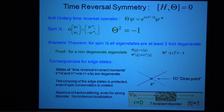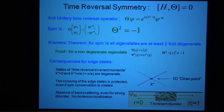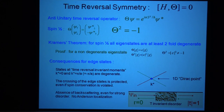In the band structure, time reversal takes K to minus K. It only makes sense to talk about Kramers' theorem at the values where K and minus K are the same point. If I have a non-zero value of K, its Kramers partner is at minus K. At a non-zero value of K, the states don't have to be degenerate because the degenerate state is at minus K. But if you're at K equals zero, then zero equals minus zero, so the Kramers partner has to be at the same momentum and the two states at that momentum have to be degenerate — they form a Kramers pair.